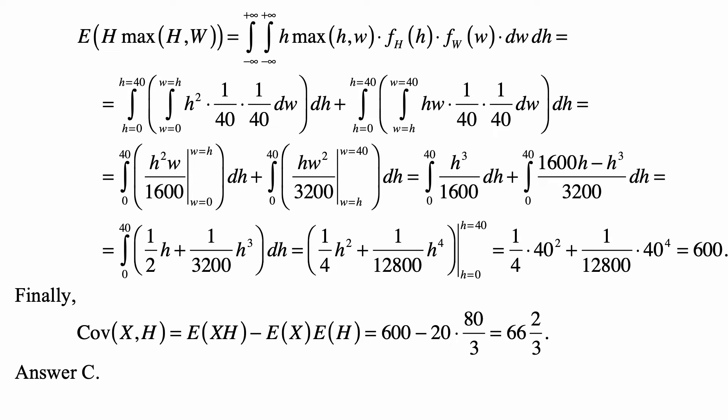In this region, the maximum is h. So it's just h squared times 1 over 40 times 1 over 40 dw and then dh. And then the integral from h equal to 0 to h equal to 40 of the integral from w equal to h to w equal to 40. And now w is the maximum of the two. So it's the integral of h times w times 1 over 40 times 1 over 40 dw dh.